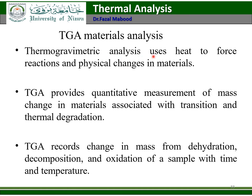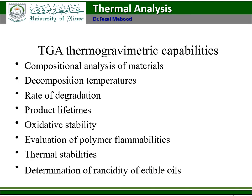TGA material analysis uses heat to force reactions and physical changes in materials. TGA provides quantitative measurement of mass change associated with transitions and thermal degradation. TGA records changes in mass from dehydration, decomposition, and oxidation of a sample within time. TGA capabilities include: compositional analysis of material, decomposition temperature, rate of degradation, product lifetime, oxidative stability, evaluation of polymer flammability, thermal stability, and determination of rancidity of edible oils and so on.